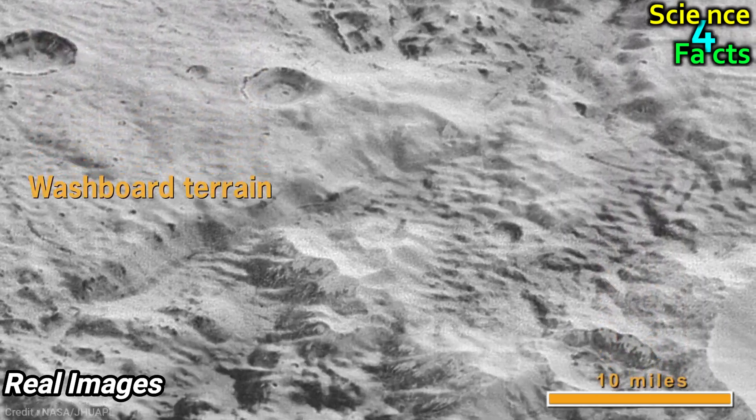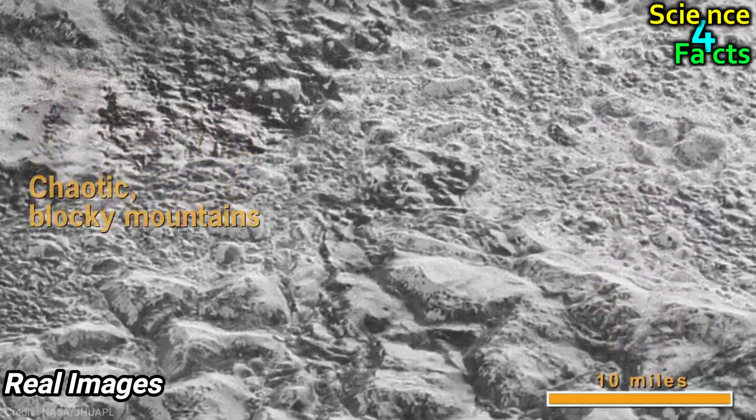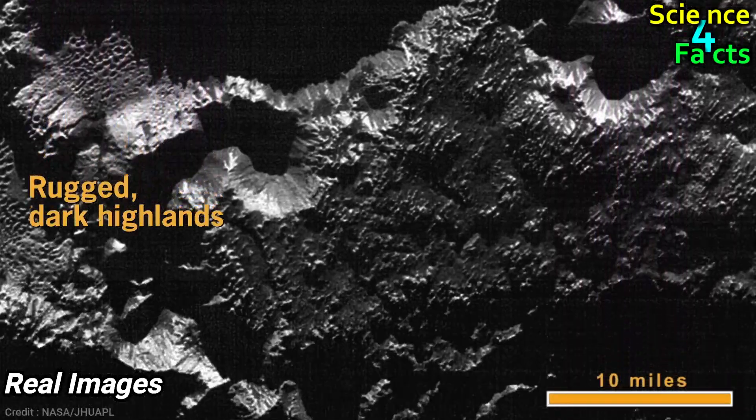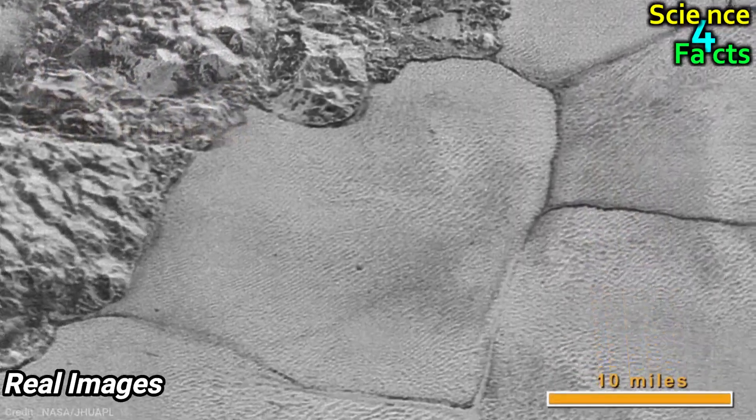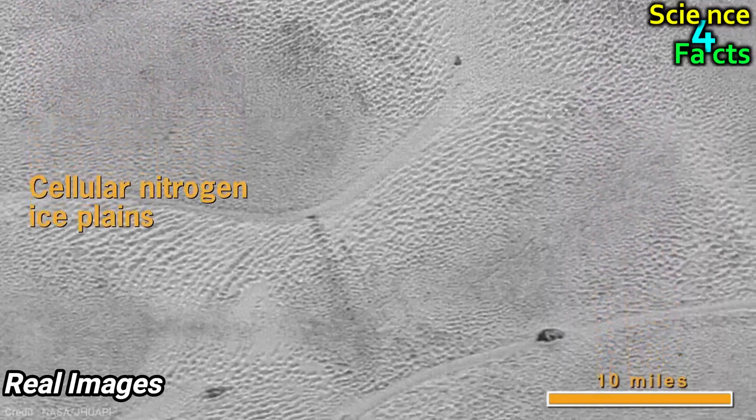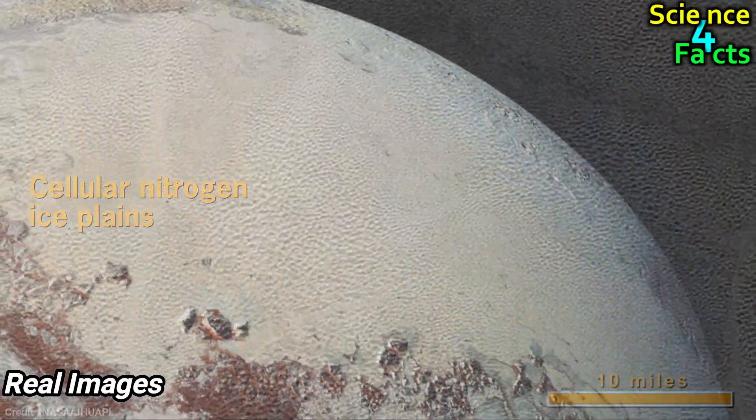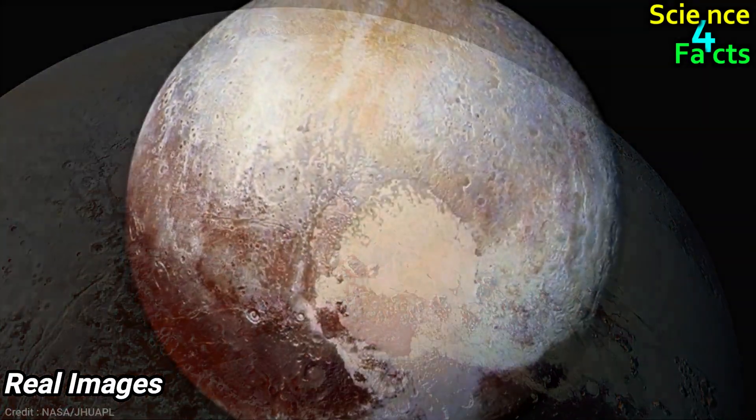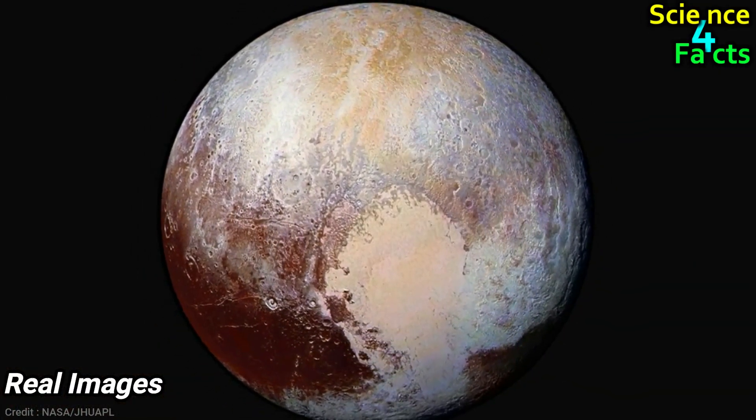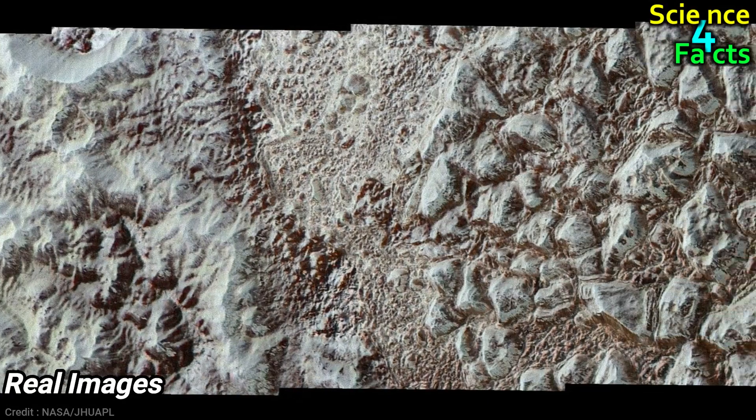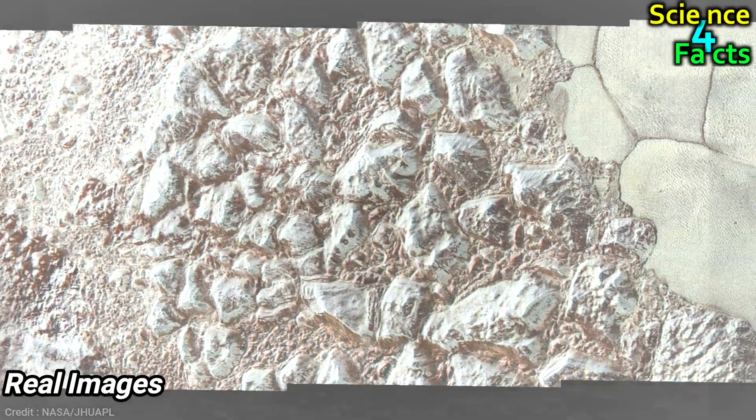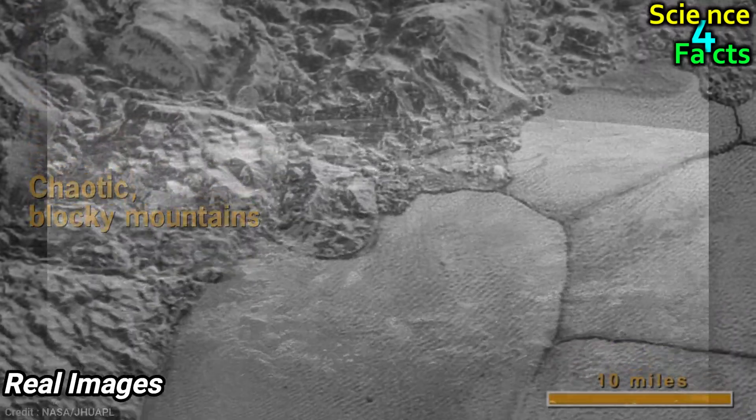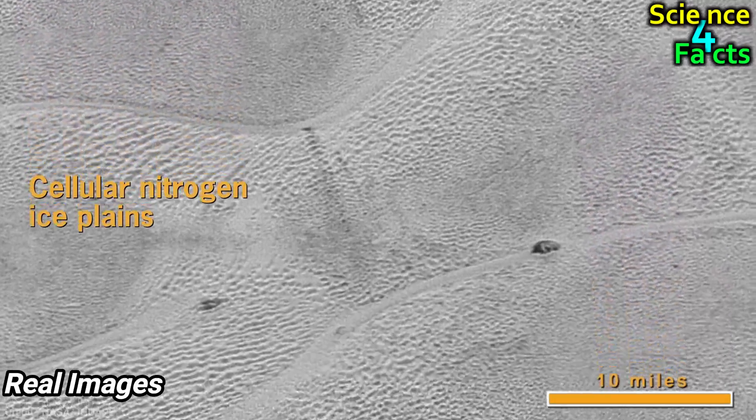The surface of Pluto is marked by a variety of geological features, including craters, mountains, and plains. Craters are formed by impacts from asteroids or other objects in space, while mountains and plains are created by tectonic activity, such as the movement of the planet's crust. One of the most notable features on Pluto's surface is a large heart-shaped plain called Sputnik Planitia, which is filled with frozen nitrogen, methane, and carbon monoxide. Other features on Pluto's surface include mountains made of water ice, long, winding valleys formed by tectonic activity, and impact craters with bright deposits made of frozen water and other volatile ices.